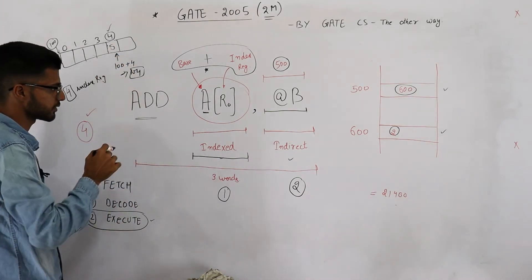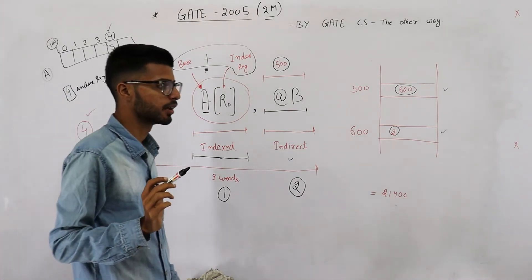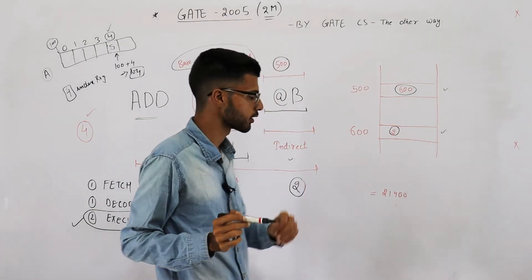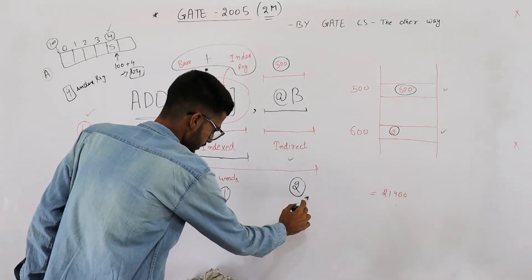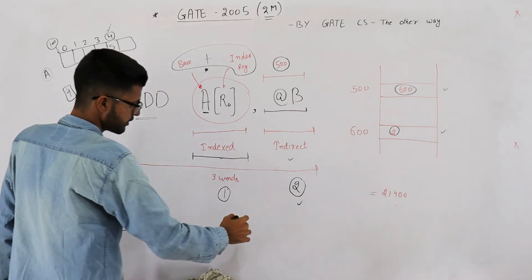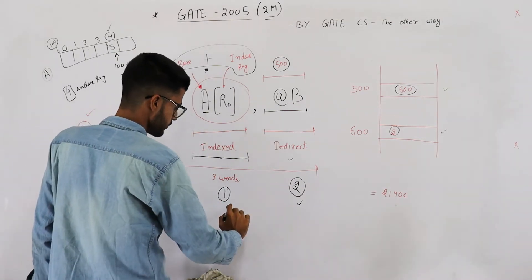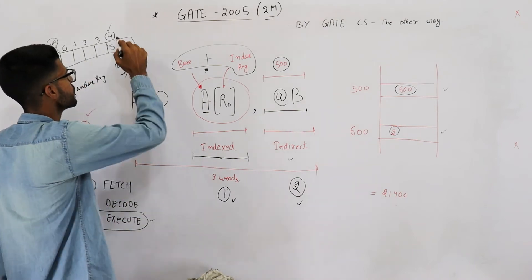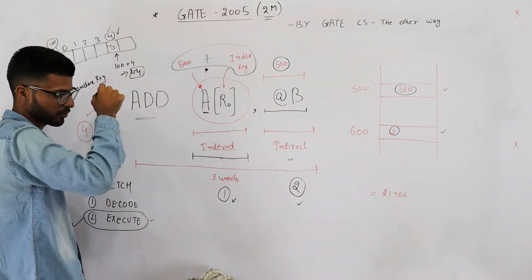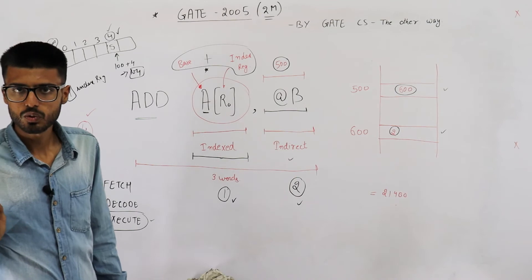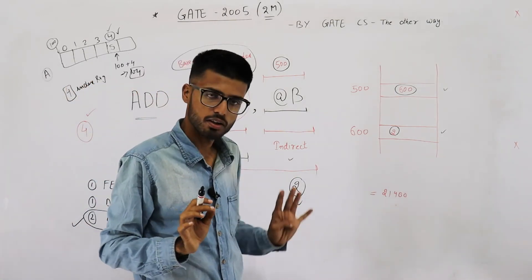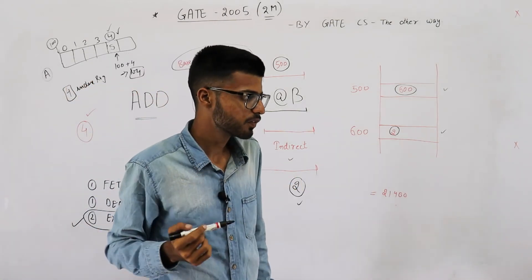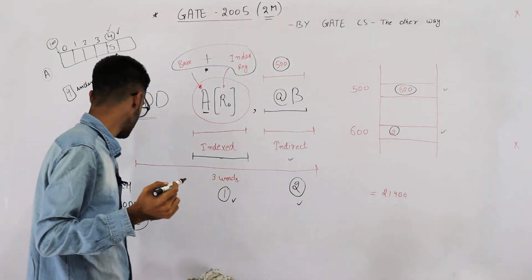Now the answer is 4. How? Two memory reads are required for fetching this one, one memory read is required for fetching this one, and one memory write is going to be required for writing the result. Okay, four is the answer.